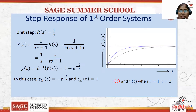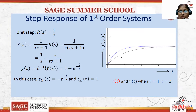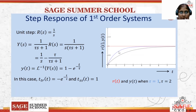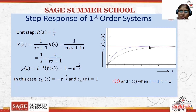As already discussed, lesser the value of time constant, the higher the speed of the response. Here the value of tau is less compared to the value of tau for this blue graph. So if the unit step function is given, the output increases slowly and reaches a value of 1.